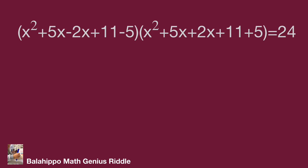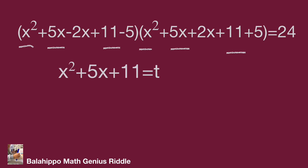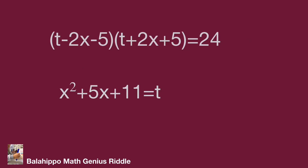Then compare these two quantities. There are common terms: x squared plus 5x plus 11. So we define x squared plus 5x plus 11 equal to t. Substituting, the two quantities become: bracket t minus 2x minus 5 bracket, times bracket t plus 2x plus 5 bracket, equal to 24.